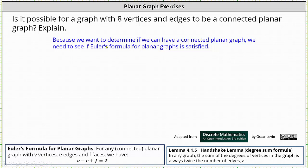From the question we know there are eight vertices and eight edges, indicating v equals eight and e equals eight. The number of faces f is unknown.